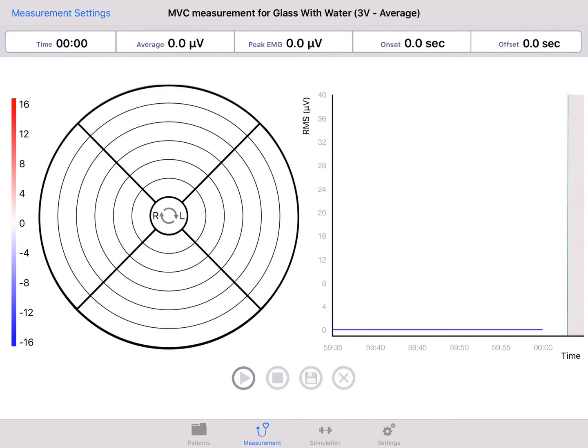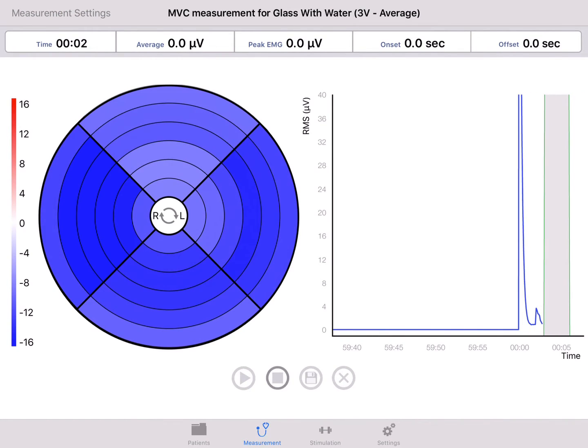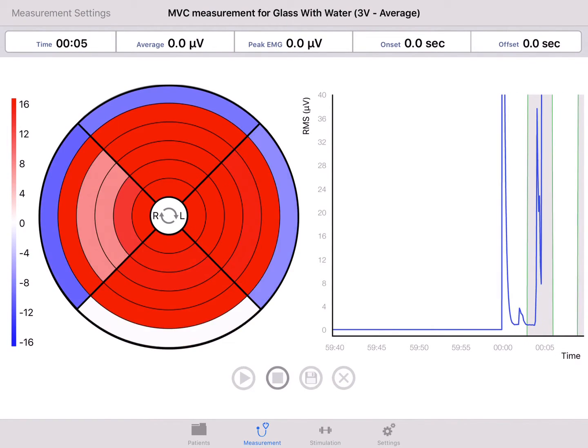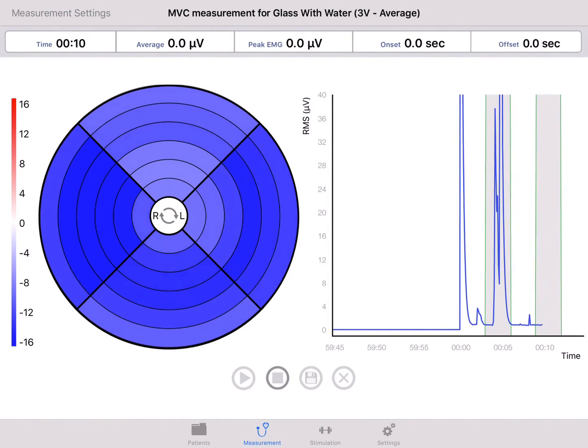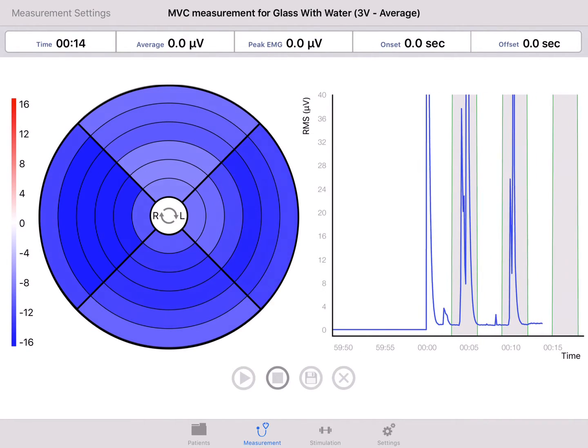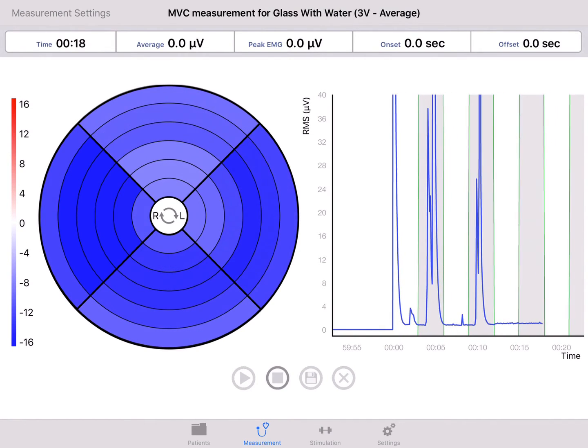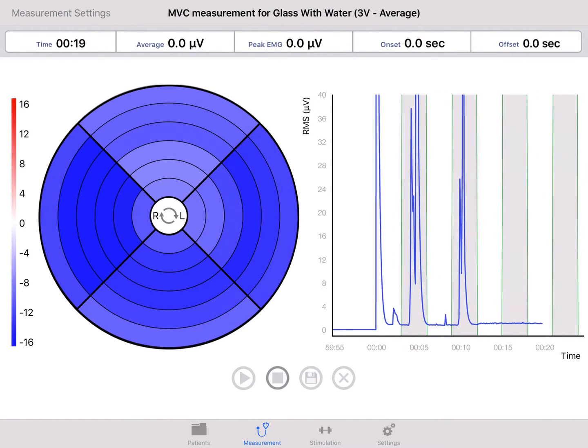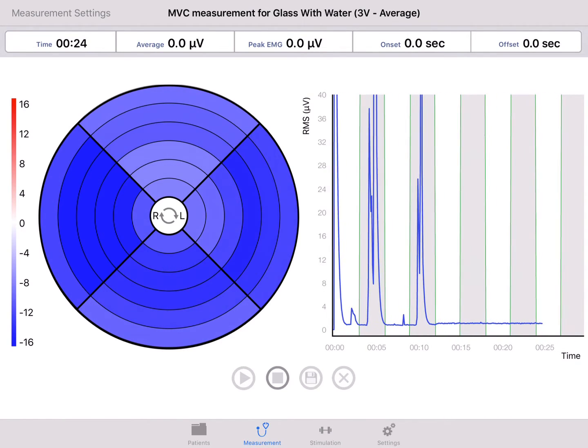Start a measurement now and ask your patients to contract at the grey bars. Please contract. You see the grid in colors now. In this kind of measurement, white means similar EMG activity as the reference group. Blue means less activity and red means more activity than the reference group.